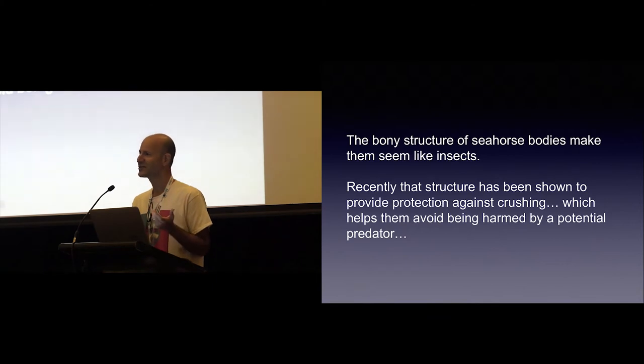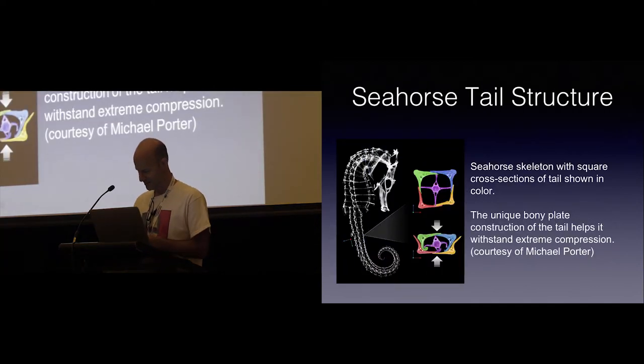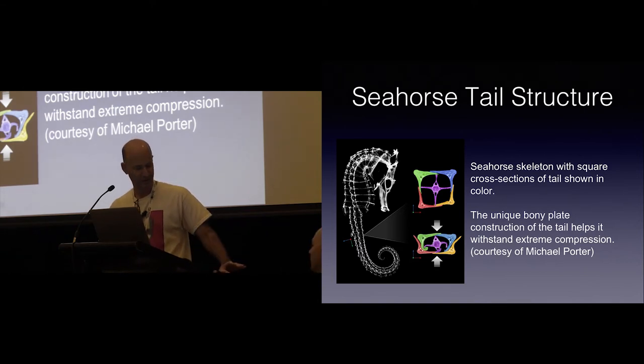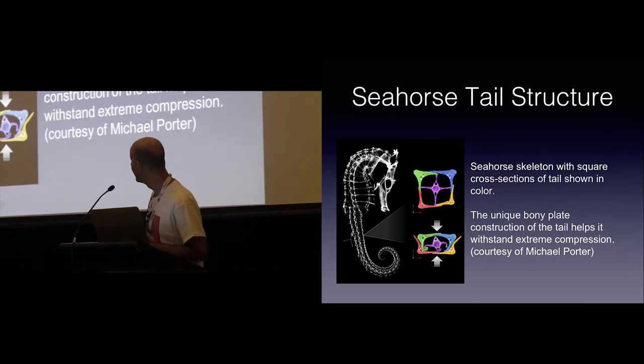More recently, it's been discovered that the bony structure which makes them look like an insect has a purpose. It provides them an armor that makes them resistant to crushing because seahorses swim very slowly, which makes them vulnerable to a predator. So they've developed this structure. You can see in the picture the cross-section of the tail. That square cross-section provides resistance to crushing. If the predator was squeezing it, it protects the spine on the inside.